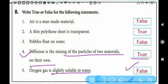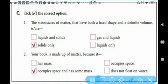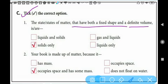Tick the correct option. The states of matter that have both a fixed shape and definite volume - liquids have changing shape depending on the container, but solids have fixed shape and definite volume.